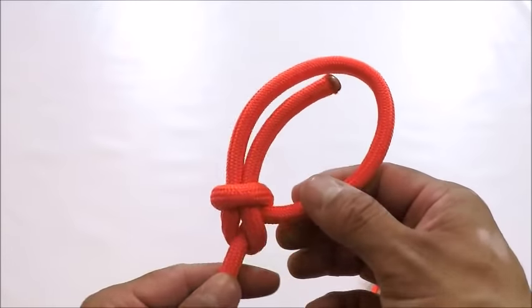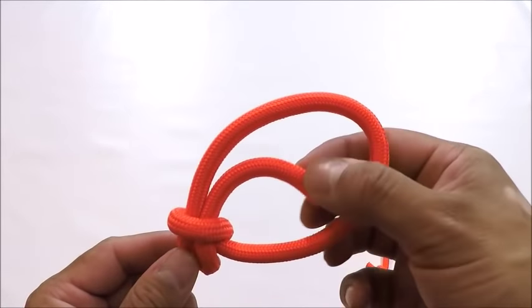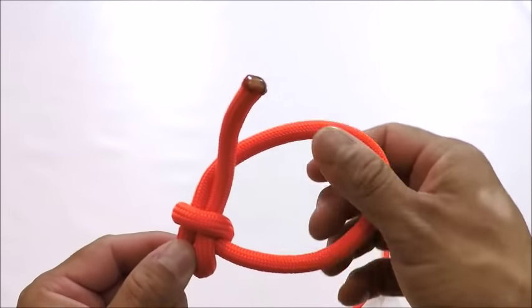Now this is why the bowline is not recommended. One, the tail end ends up inside your loop, so you have to push that out of the way if you're going to use it.